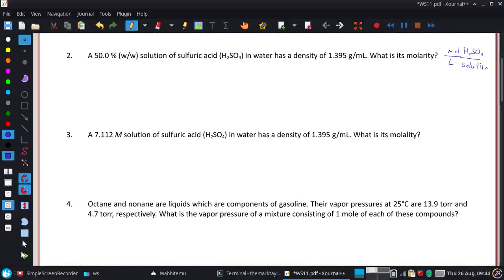We're going to use that to figure out what information we get from the 50%. The 50% weight-to-weight tells us there are 50 grams of H2SO4 to every 100 grams of solution.